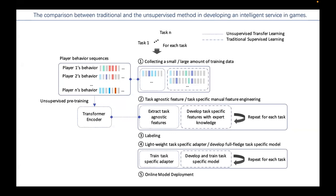That's why we need to find a way to train a model once and then deploy the same model to different tasks, reducing the cost of labeling and human intervention as much as possible. That's why we resort to the method of unsupervised pre-training.